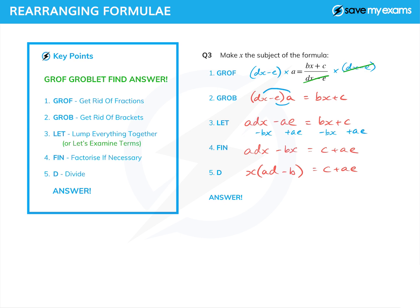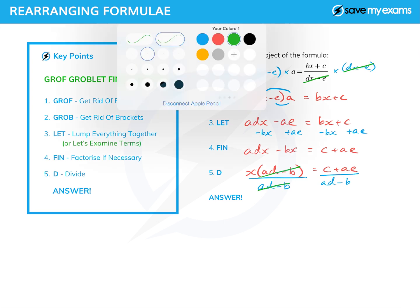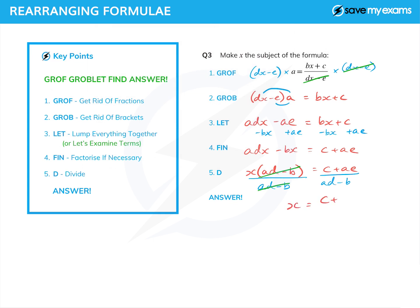Having done the factorising because it was necessary, I now divide. What do I divide by? The thing next to the x — so I divide by the whole bracket, (ad minus b), on both sides. The ad minus b cancels because it is a factor top and bottom, and I get x is equal to (c plus ae) over (ad minus b). And Groff Groblet has indeed found the answer. These more complicated ones are not easy, so do go and do plenty of practice — there are lots of questions on the site.